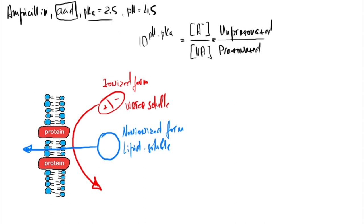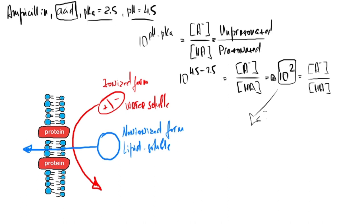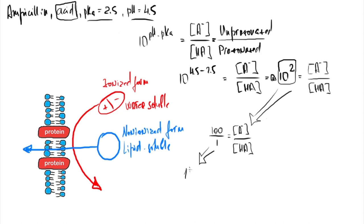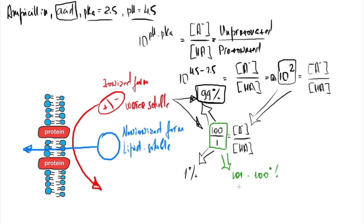pKa is 2.5 and pH is 4.5. So 10^(4.5 − 2.5) = 10^2 = 100/1 = ratio of ionized to non-ionized. Therefore 99% of drug is in water-soluble (ionized) form and 1% in non-ionized form. Total = 101 parts; X = (100 × 100) / 101 = 99%. So 99% of ampicillin will be in water-soluble form at this pH, meaning only about 1% is in the lipid-soluble form.